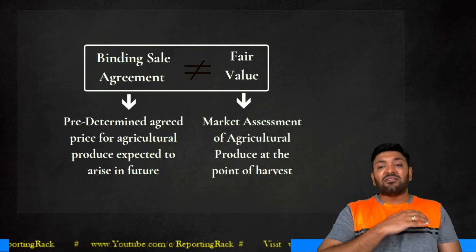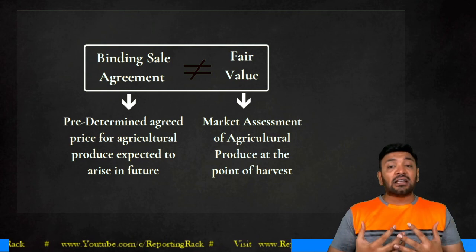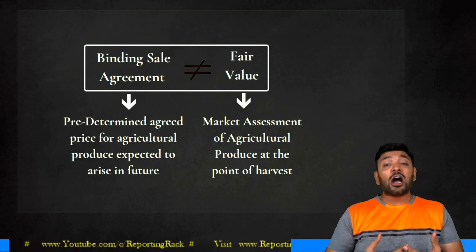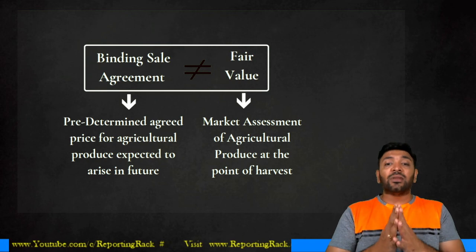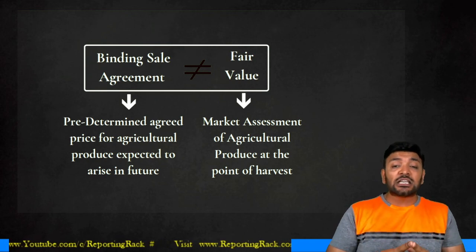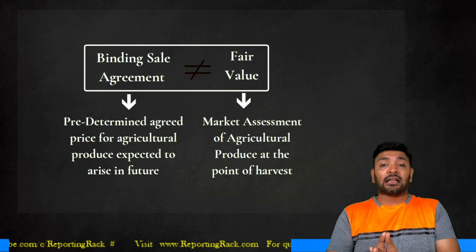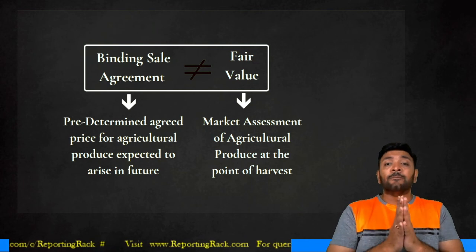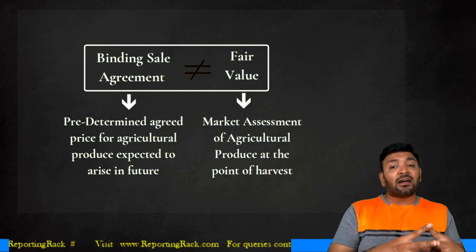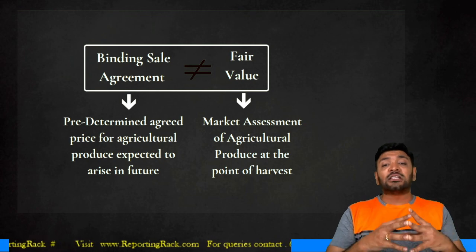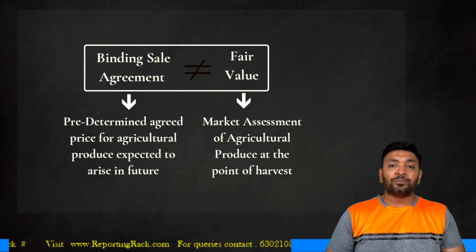This brings us to the end of the discussion on Ind AS 41. It is a very typical standard with a lot of concepts relating to fair valuation, because it is very difficult to ascertain costs in case of biological assets. Since costs cannot be measured, fair value is a much more logical valuation of agricultural produce.